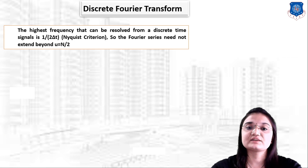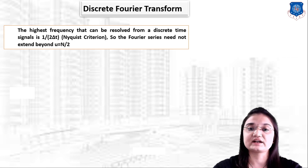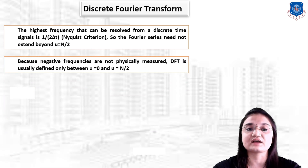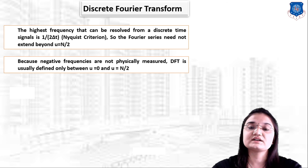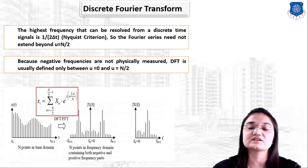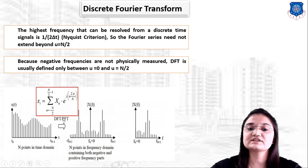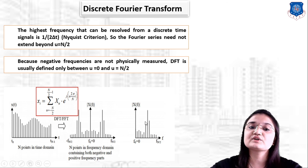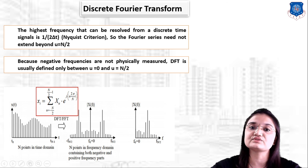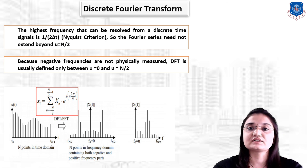The highest frequency that can be resolved from a discrete time signal is 1/(2Δt). Therefore the Fourier series need not extend beyond u = N/2. Since negative frequencies are not physically measured, the DFT is usually defined only between u = 0 and u = N/2. In the figure you can see N points in the time domain and N points in the frequency domain containing both negative and positive frequencies, but we use only from u = 0 to u = N/2.